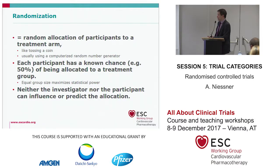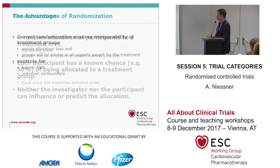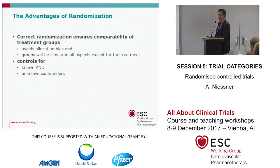Neither the investigator nor the participant can influence or predict the allocation. Randomization needs to be done properly and not be influenced in any way, particularly not by an investigator — so no open envelopes or anything like this.